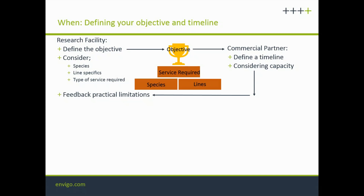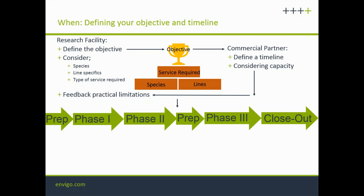It's important to consider your practical limitations, and this is the case for smaller projects too. There may be local legislation requiring you to apply for a permit internally to transport the animals, and that process might mean the timeline your commercial partner provided doesn't fit your requirements. It really needs to be a back-and-forth conversation, but at some point you should establish a timeline.